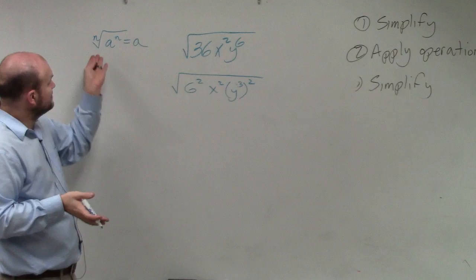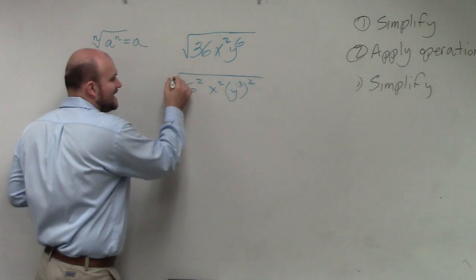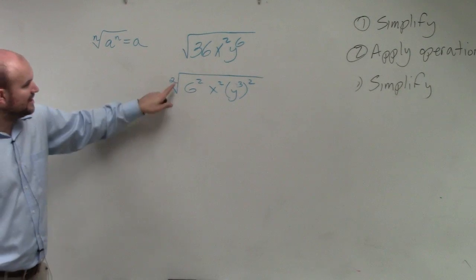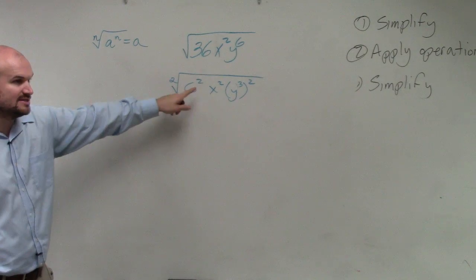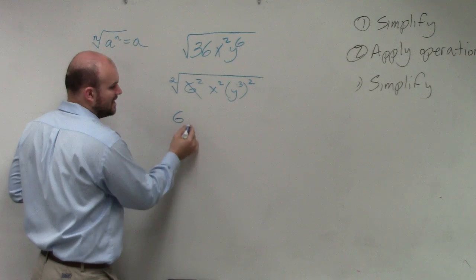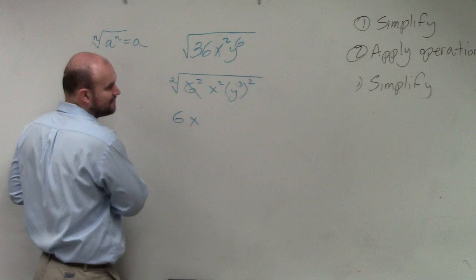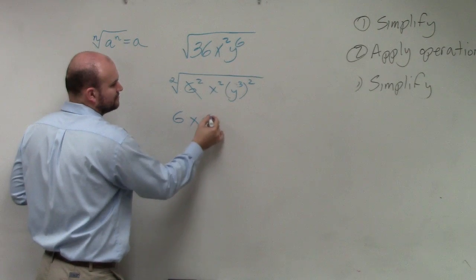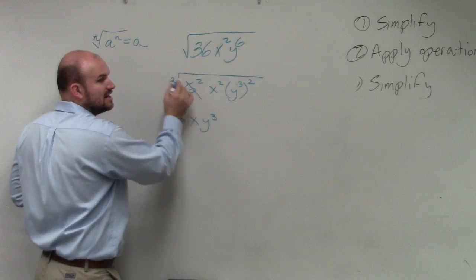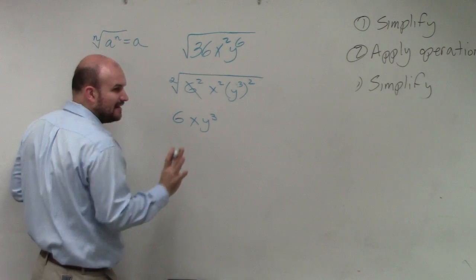All we're looking for is whenever the index is the same as the power. So remember, the index in this case is 2. If there's no index, we assume it's 2. So therefore, the square root of 6 squared is 6. The square root of x squared is x. The square root of y cubed squared is just y cubed, right? However,